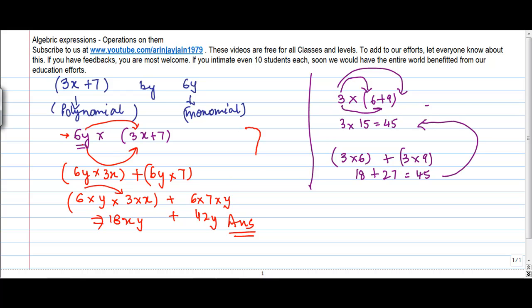So the thing to remember is that whenever you have a monomial and a polynomial, then this monomial has to be multiplied by each and every item or the term separately.